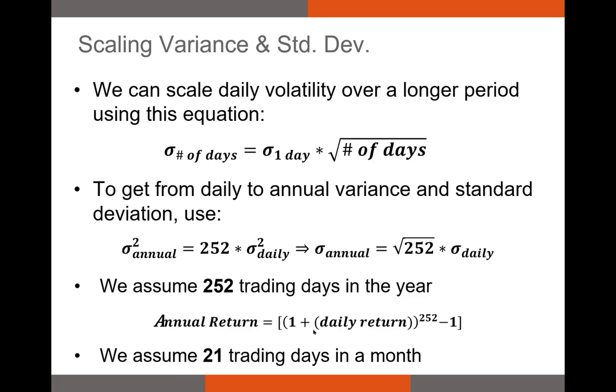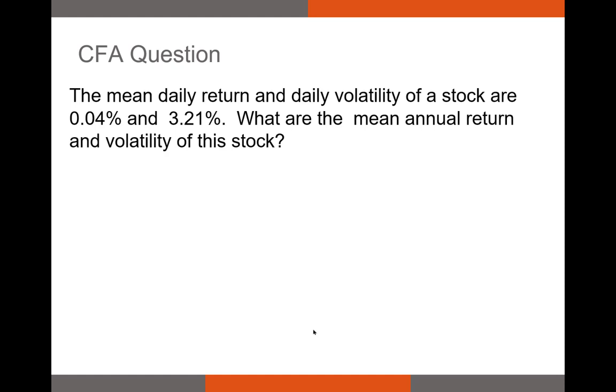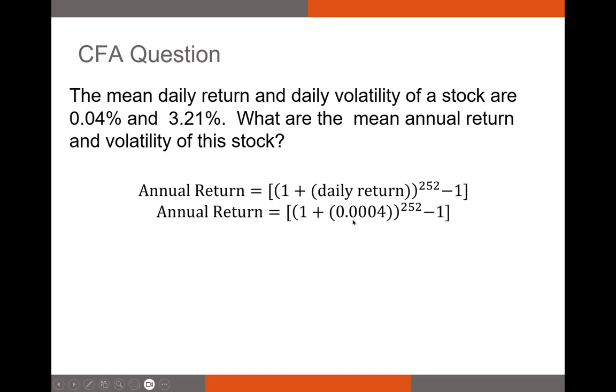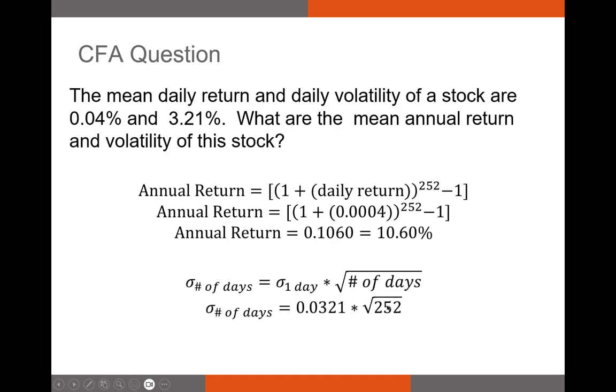But let's take a look at a CFA question, a question that could show up on a CFA exam. The mean daily return and daily volatility of a stock are 4 basis points and 3.21%. What are the mean annual return and volatility of the stock? Our annual return formula is right here. We have 4 basis point return, so we take 1.0004 to the power of 252 for 252 trading days in a year, subtract 1, and that gets us 10.6%. If we're trying to scale up our daily volatility to an annualized volatility, we take our daily volatility times the square root of the number of days in a given year. So in this case, that's 252, and that gets us an annualized volatility of 50.96%.